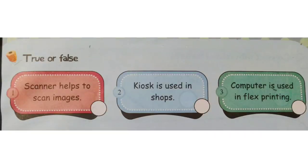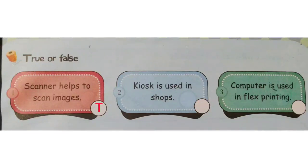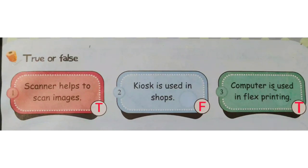Next is true or false. First question: a scanner helps to scan images. Of course it's a right answer, so you have to write T — T stands for true. Second question: a kiosk is used in shops. No, it's not a right answer, so you have to write F — F for false. Third question: a computer is used in flex printing. That answer is right, so you have to write T.